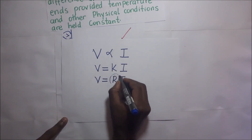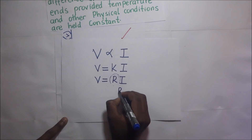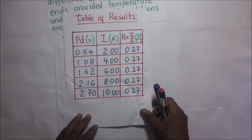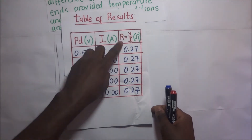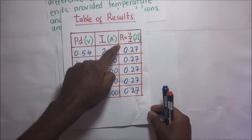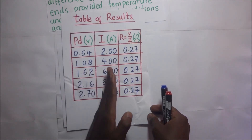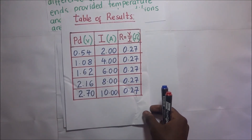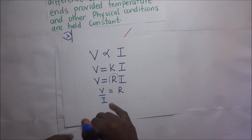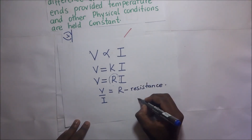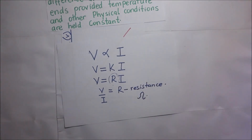If we make R the subject of the formula, resistance equals V over I. Just like in our table of results, we are able to show that R equals V over I, and it is constant throughout all the values we obtained in our experiment. This constant of proportionality R is called the resistance, measured in Ohms — named Ohms after the inventor himself, George Simon Ohm.